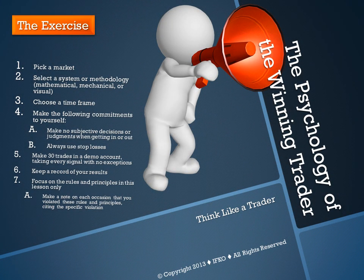I want to give you an exercise. This exercise has to do with learning to trade an edge like a casino. The objective of the exercise is to convince you that trading is just a simple game of probabilities, a numbers game — not much different from pulling the handle of a slot machine. At the micro level, the outcomes to individual edges are independent occurrences and random in relationship to one another. At the macro level, the outcomes over a series of trades will produce consistent results.